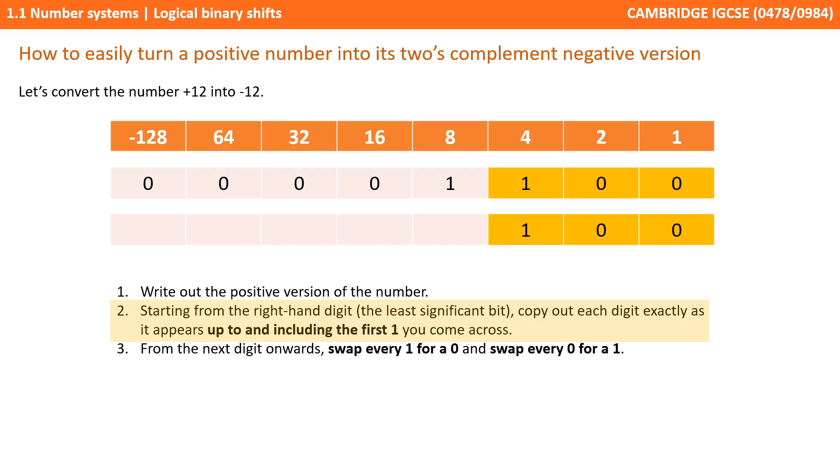After this point, we now switch. So where we had a 1, we instead write a 0, and where we had a 0, we then write a 1. What you've ended up with is the negative version of 12, and this works every time.